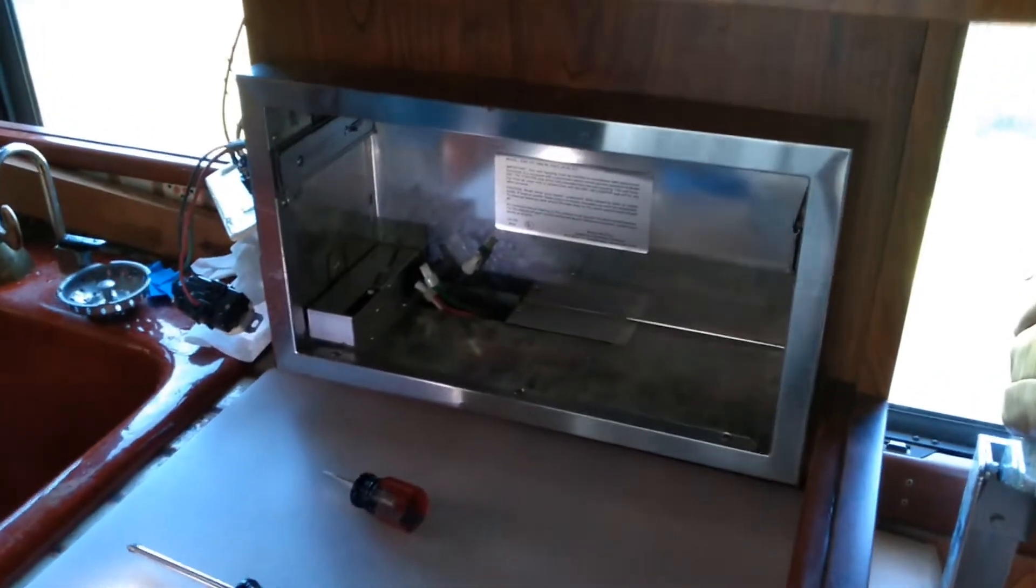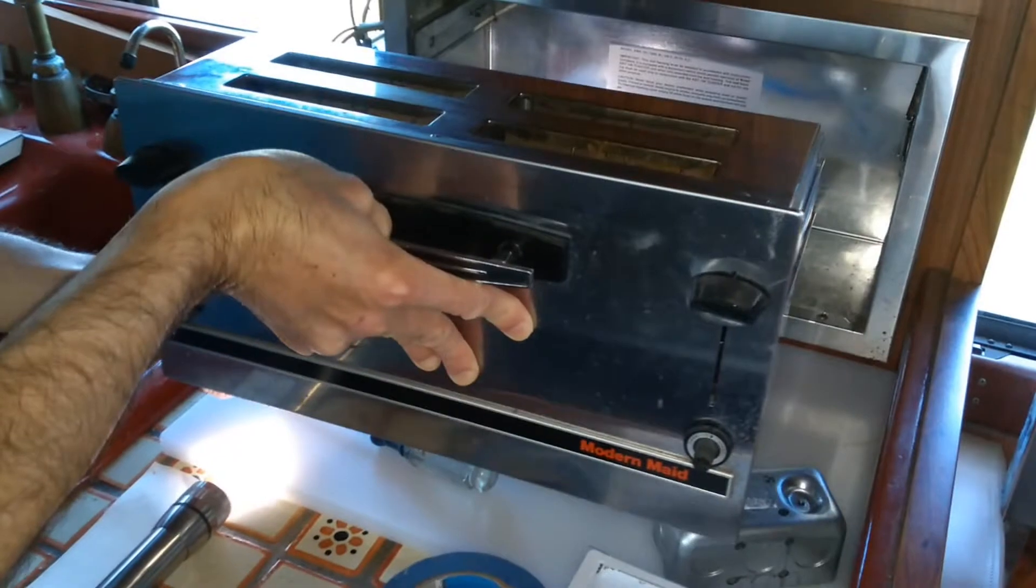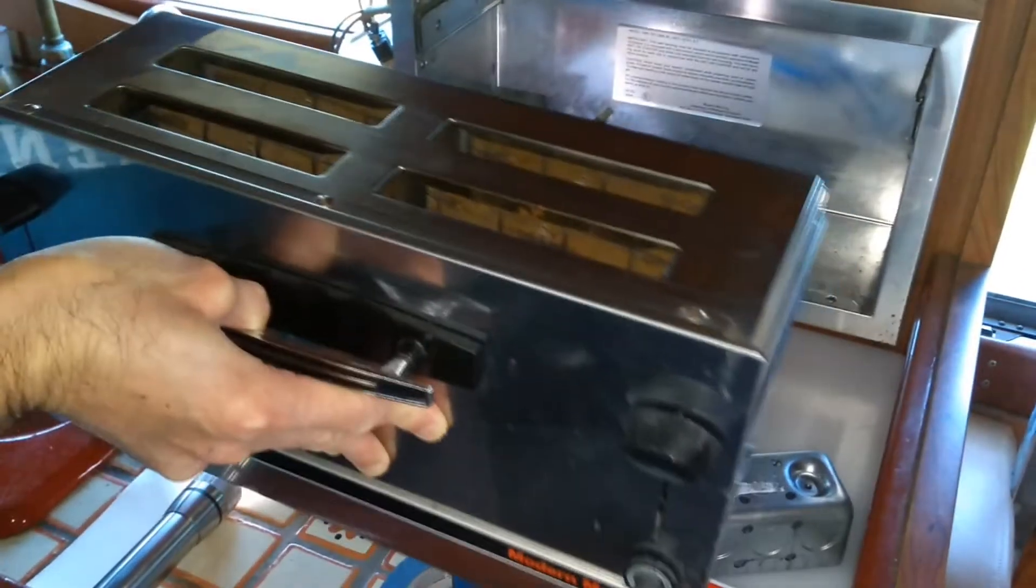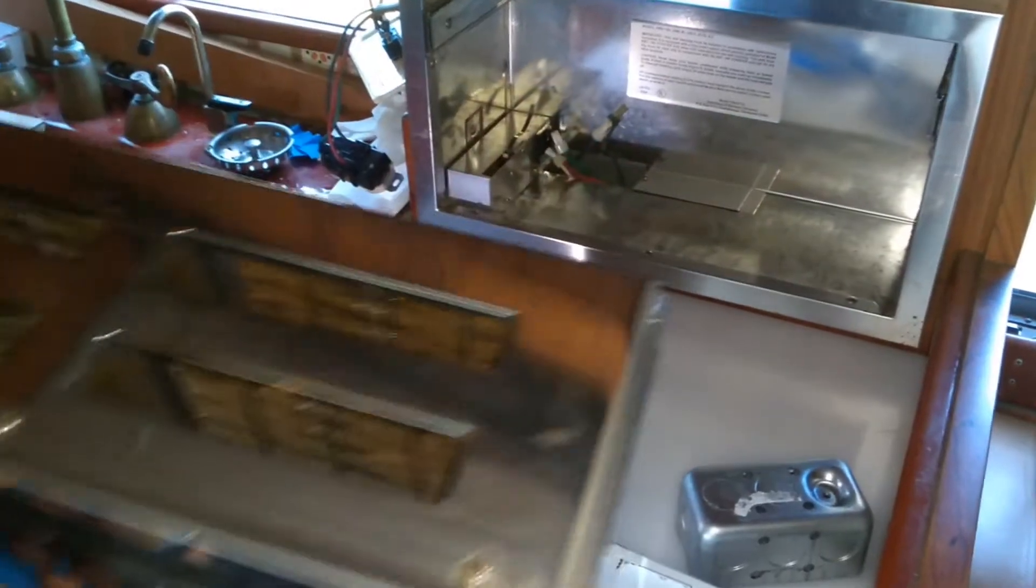Okay, so this toaster normally fits inside that hole and pulls out to use and pushes in when you store it. And it sits on these rails. These are the rails that it glides on.